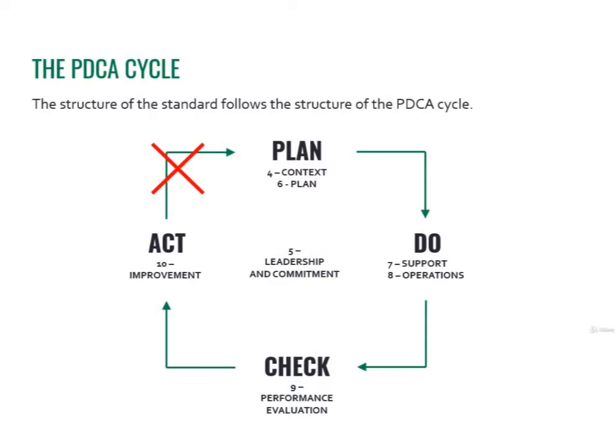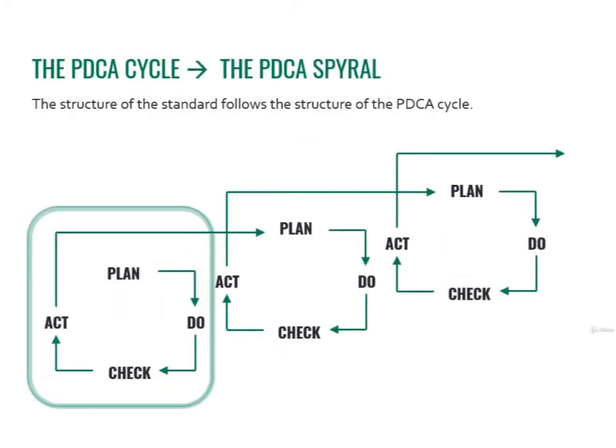But there would be no point in going back to the first plan step — what would be the point of going back to what we started? What we really need is for the ACT step to be followed by another plan step in another cycle. So overall, the actual PDCA is a spiral, a growing spiral. Little by little, this spiral works and leads to continuous improvement.